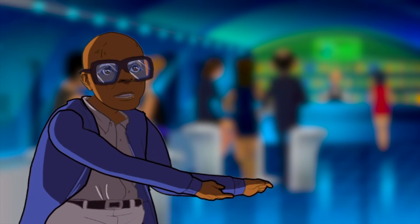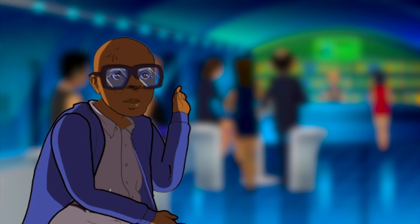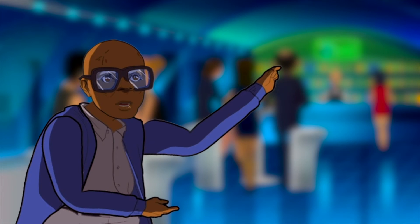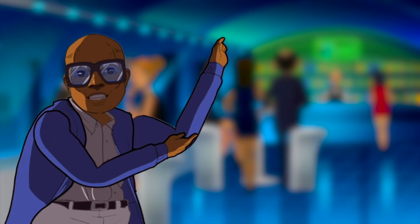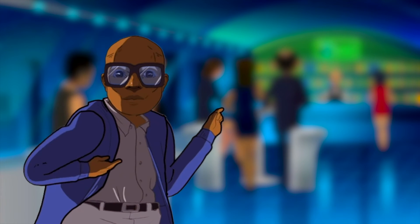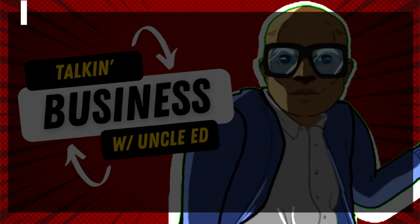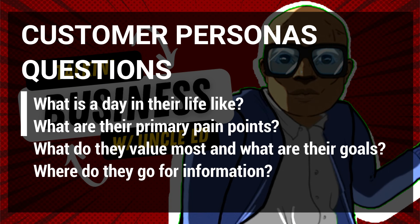Next, your customer persona has the location of your particular customer segments. Personas differ based on location — customers in North America are different than customers in China or Europe. So identifying the geographic location of your customer is very important. And a good customer persona also has information about behavior: things like their occupation, their hobbies, and their interests, so you can get a deeper feel about who your customer is and what they like and don't like.